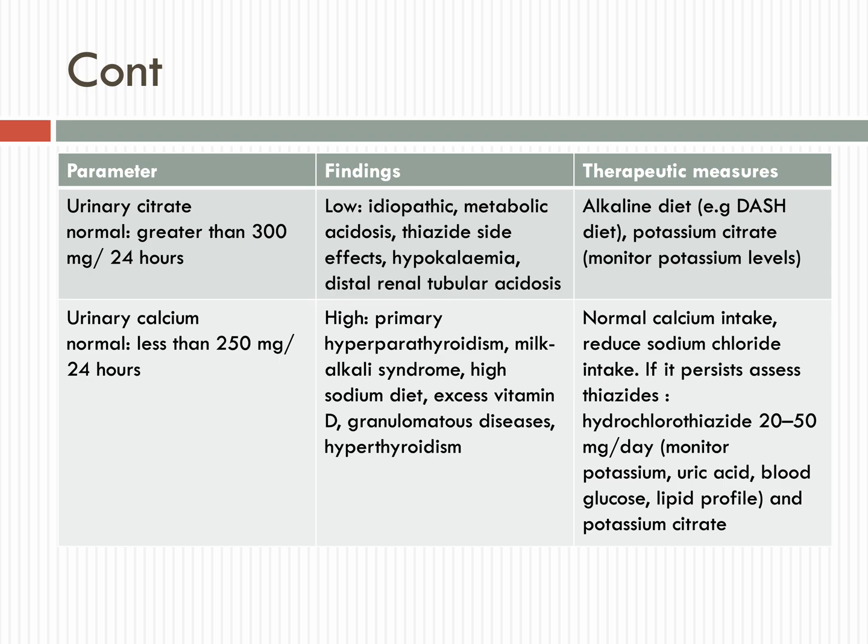Urinary citrate: normal values are greater than 300 mg per 24 hours. If found low, an alkaline diet such as the DASH diet — a plant-based diet — or potassium citrate can be recommended. Potassium levels should be monitored when prescribing potassium citrate. Urinary calcium: the normal range is less than 250 mg per 24 hours. If high, possible causes include primary hyperparathyroidism, milk-alkali syndrome, and high sodium diet. Therapeutic measures include maintaining normal calcium intake and reducing sodium chloride intake. If it persists, thiazide diuretics at 20 to 50 mg per day can be tried, with regular monitoring of potassium, uric acid, blood glucose, and lipid profile. Potassium citrate can also be added.